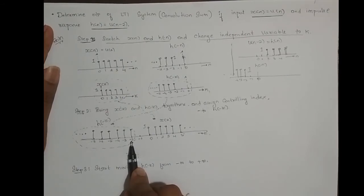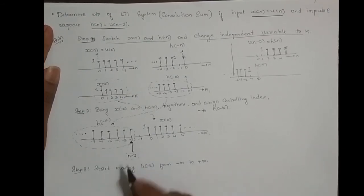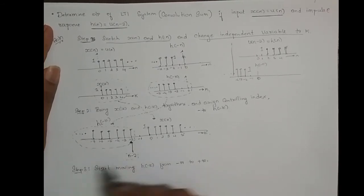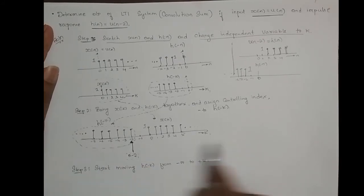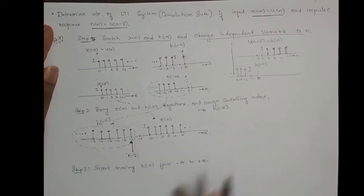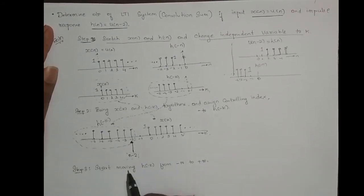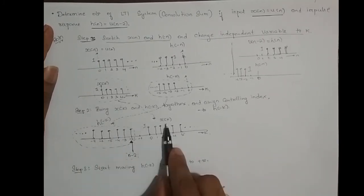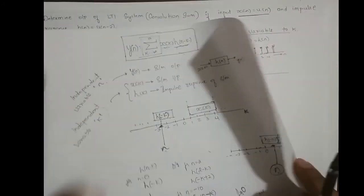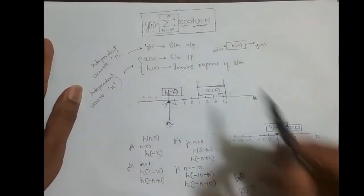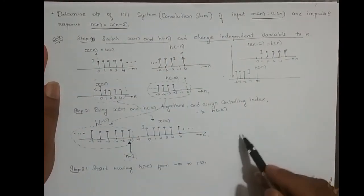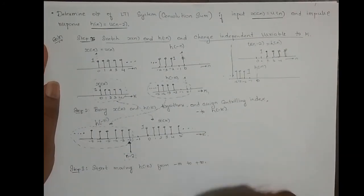Once you assign the controlling index n minus 2, you have the liberty to move the slider anywhere you want — to minus 5, minus 10, or minus infinity. You can move the n minus 2 slider from minus infinity to plus infinity. In step three, I start moving h(-k) from minus infinity to plus infinity to decide where the overlapping region of h(-k) and x(k) is, so that I can take the sum of products for the overlapped portion, as explained in the previous video. We will continue solving this problem in the next video.